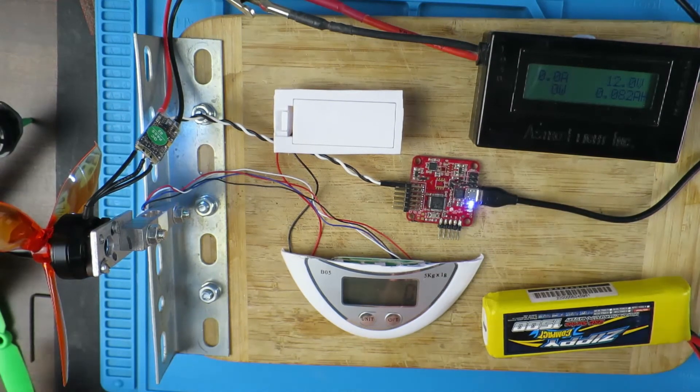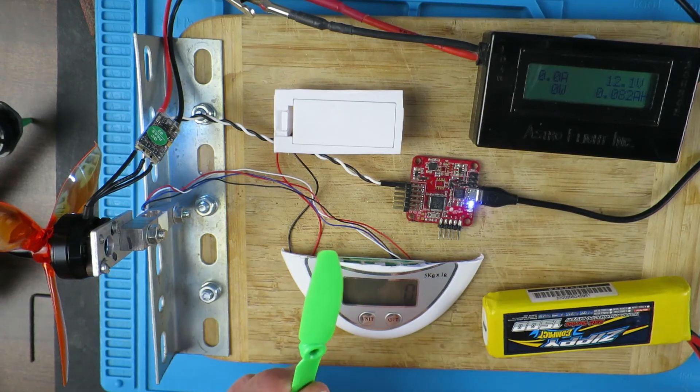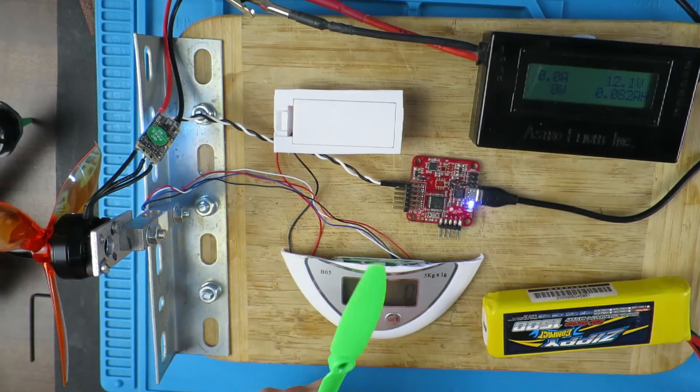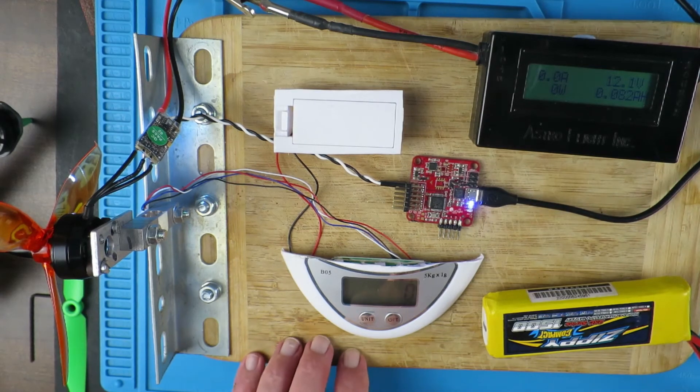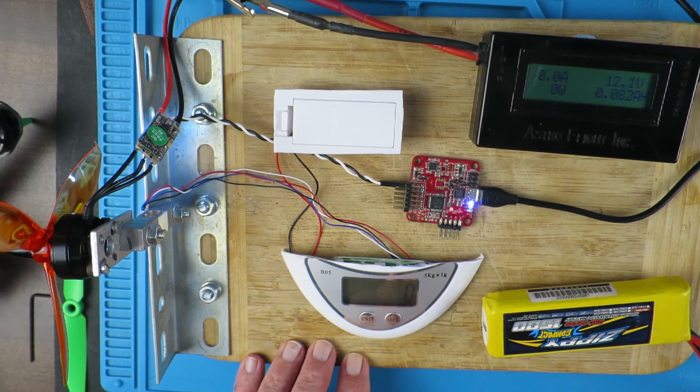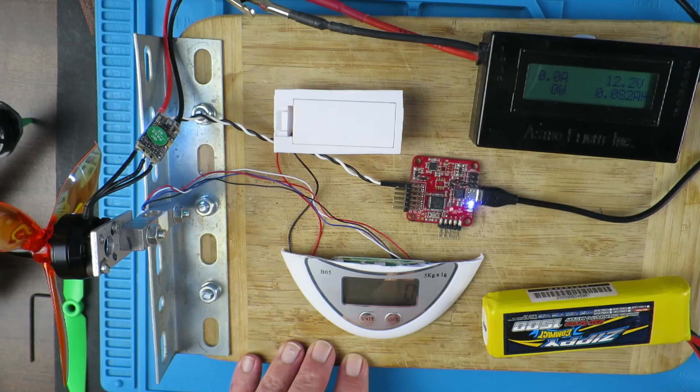So at the same current as this one was drawing, it was only providing some 400 grams of thrust. So that's the whole purpose of this rig, is to be able to make those comparisons quickly and decide depending on our style of flight which propellers are best suited for our needs. I hope you found that interesting.